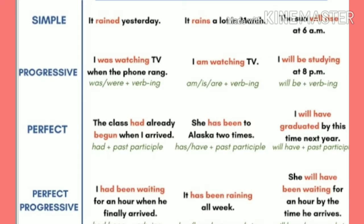Now let's see some examples. In simple past tense we say 'it rained yesterday.' In simple present tense we say 'it rained a lot in March.' In future we say 'the sun will rise at 6 a.m.'